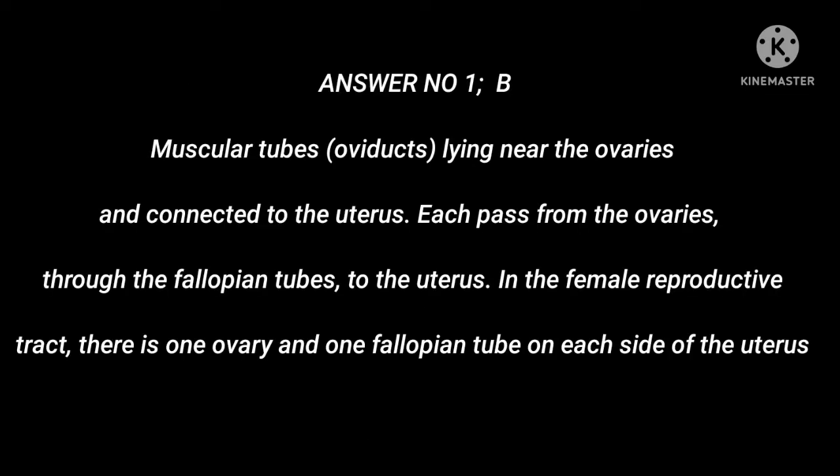Answer number 1: B. The fallopian tube is a muscular tube, also called oviduct, lying near the ovaries and connected to the uterus. Each egg passes from the ovaries through the fallopian tubes to the uterus. In the female reproductive tract, there is one ovary and one fallopian tube on each side of the uterus.